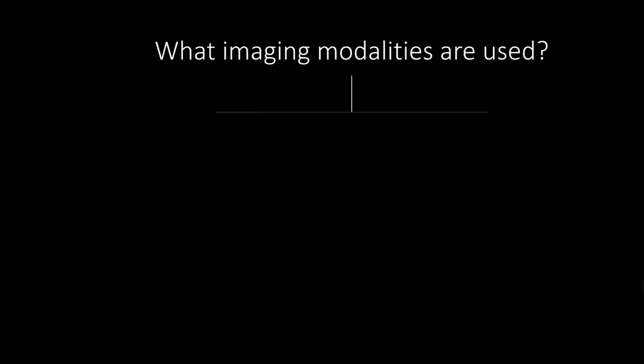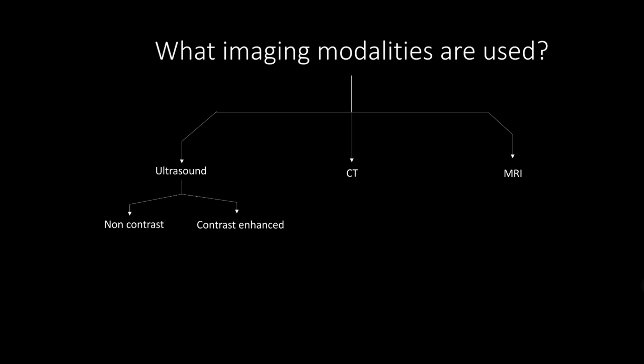The imaging modalities used in LIRADS include ultrasound, CT, and MR. In ultrasound, we can use non-contrast or contrast-enhanced modalities. Non-contrast ultrasound is mainly used for surveillance, while contrast-enhanced ultrasound can be used for diagnosis and treatment response. CT and MR are used for diagnosis as well as staging.